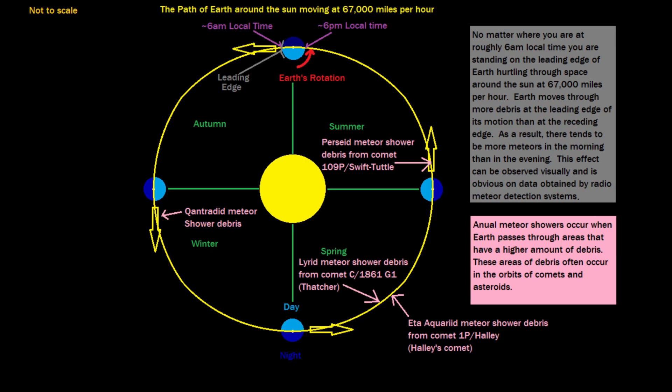There tends to be more meteors in the morning just before dawn than in the evening. This is because in the morning you are on the leading edge of Earth in its orbit, and in the evening you are on the trailing edge of Earth.